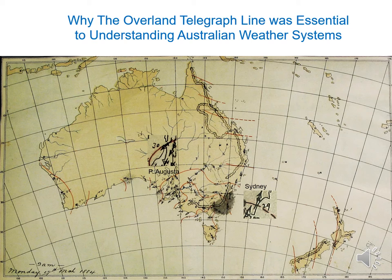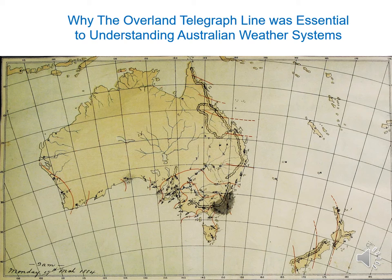These were probably recorded by the local postmasters or telegraphists who had been trained as weather observers. This system works only when there are enough observations to determine how one observation is connected to a similar one many kilometers away. But in areas with no observers, the lack of data is a show stopper.